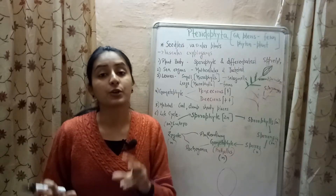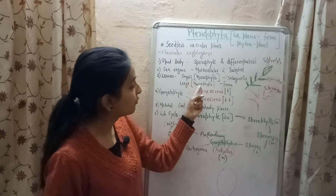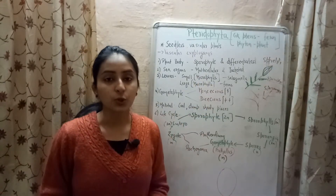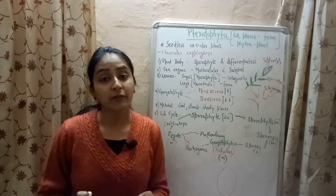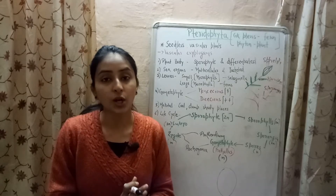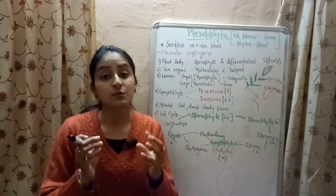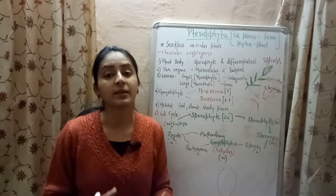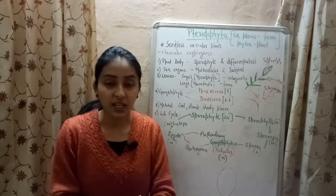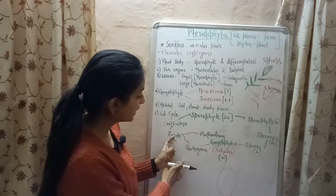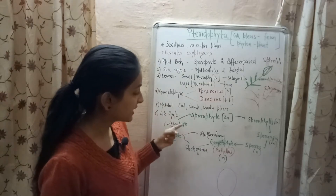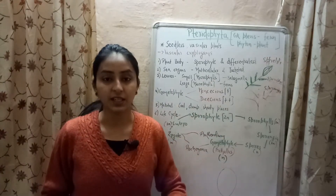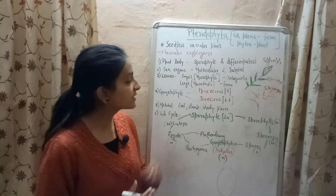The larger leaves of pteridophyte plants are known as macrophylls, whereas the small leaves are known as microphylls. The main plant body of pteridophytes is sporophytic, having two sets of chromosomes. Spores germinate to form the gametophyte, which has male and female reproductive structures. These produce sex cells that fuse to form a zygote, which forms an embryo, leading to the formation of the sporophyte, and the cycle repeats.